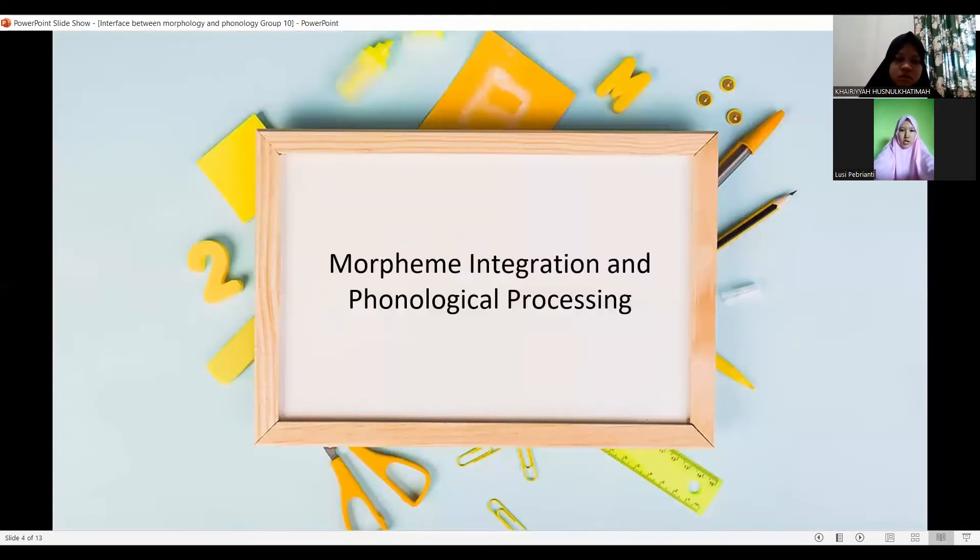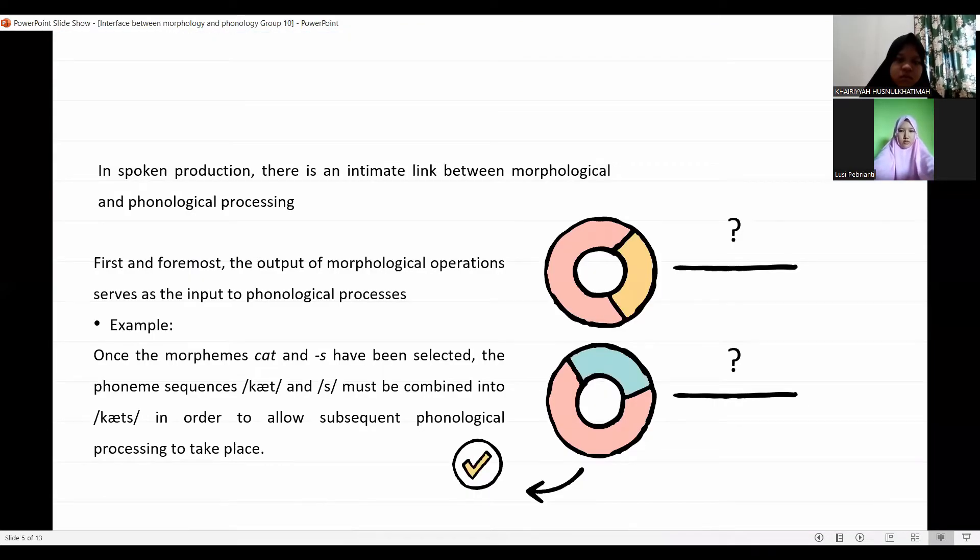Morpheme integration and phonological processing. In spoken production, there is an intimate link between morphological and phonological processing. First and foremost, the output of morphological operations serves as the input to phonological processes.